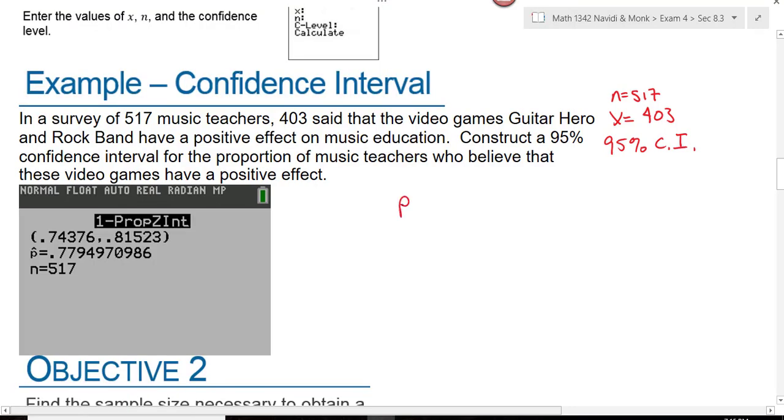Now the population parameter that we're estimating is P, the population proportion, and that's going to be 0.744 to 0.815. What we would say here is that we are 95% sure that between 74.4% and 81.5% of music teachers think music video games are good.